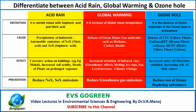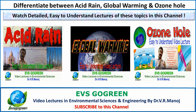That was the most appropriate way to differentiate the three major environmental issues in environmental sciences and engineering: acid rain, global warming, and ozone hole — covering definition, cause, effect, and prevention. Go through this again so you don't mix up the three individual environmental phenomena. Detailed lectures on these topics are available on the YouTube channel EVS Go Green. Thank you very much and goodbye.